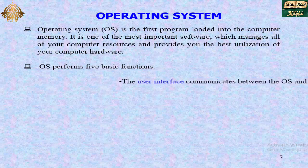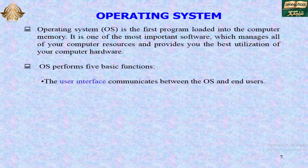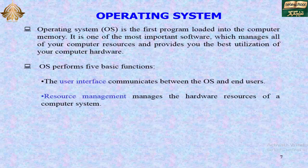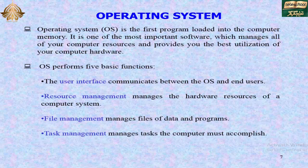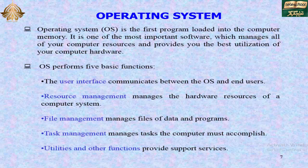The operating system performs five basic functions. The user interface communicates between the operating system and end users. Resource management manages the hardware resources of a computer system. File management manages files of data and programs. Task management manages tasks the computer must accomplish. Utilities and other functions provide support services.